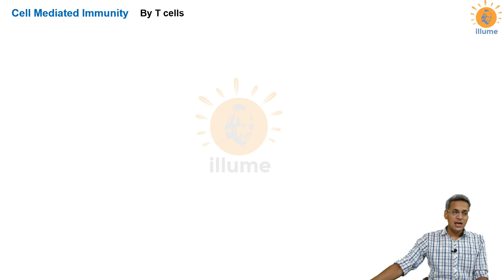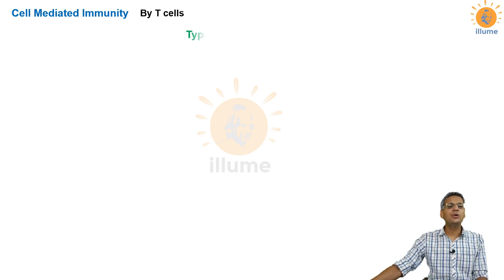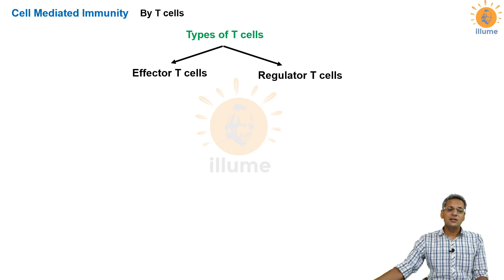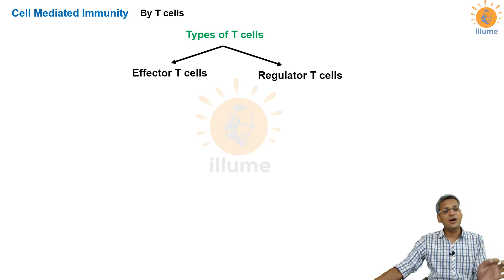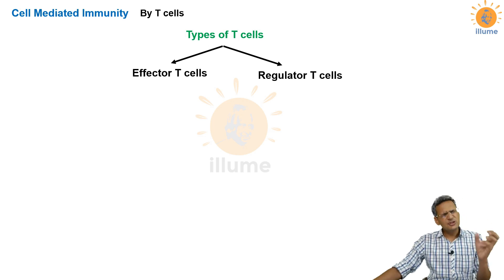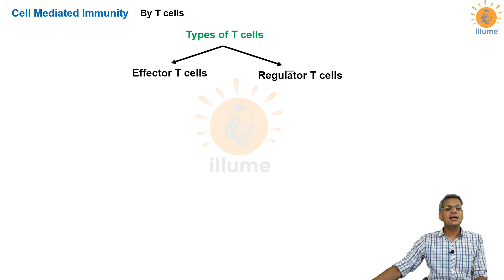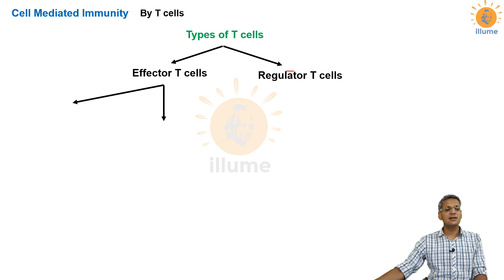Cell mediated immunity is performed by T cells. There are two categories of T cells: effector T cells and regulator T cells. Effector T cells produce the actual immune effect — they kill viruses and infected cells. Regulator T cells regulate immunity by either activating or inhibiting it. The direct immune effect is produced by effector T cells.